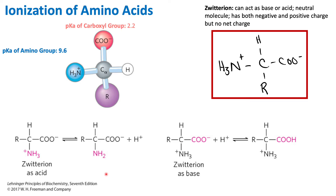The zwitterion can also act as a base. A base accepts a hydrogen. The carboxyl group of the zwitterion has a negative charge on the oxygen, allowing it to pick up a hydrogen. When it does, it no longer has that negative charge. So the amino group is able to donate protons, and the carboxyl group is able to act as a base and accept protons.